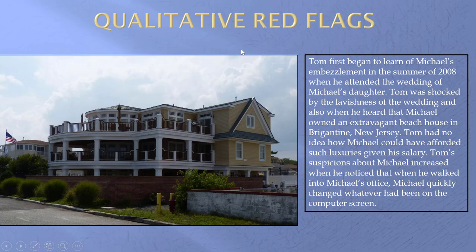Our red flags needn't always be quantitative. This was Michael. Michael was the controller. Michael earned about $100,000 to $200,000 per year. However, Michael had a massive Bank of America brokerage account.